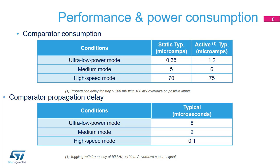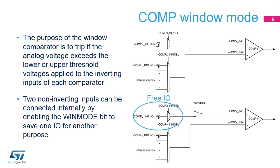The on-chip comparator configuration capability allows the user to select the best performance point for the targeted application. It replaces the external standalone comparator, thereby reducing the bill of materials. The purpose of the window comparator is to trigger an interrupt if the analog voltage goes beyond the defined lower and upper voltage thresholds applied to the inverting inputs of each comparator. Two non-inverting inputs can be connected internally by enabling the win-mode bit, and therefore save one I/O for another purpose.